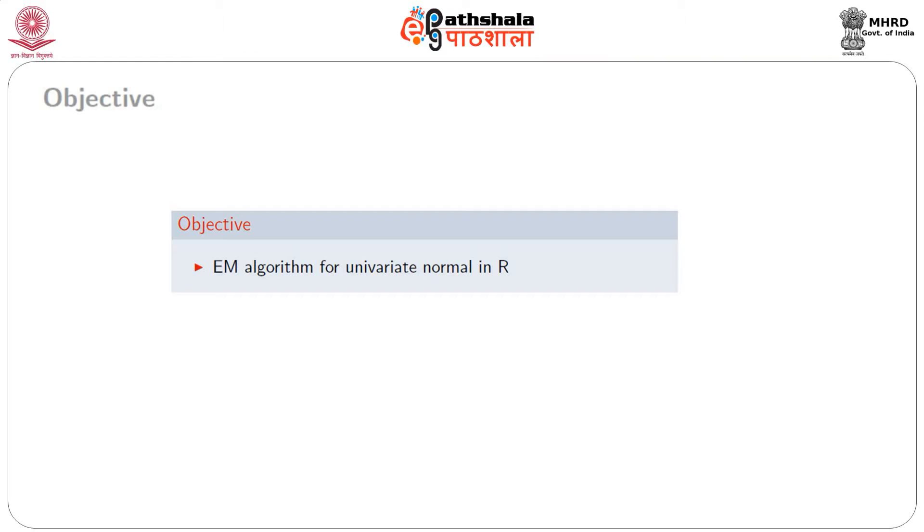Basically what we would do is write a function in R that computes the mean and the variance for a univariate normal distribution when some of the values are missing. We would write a full function on the EM algorithm, but since it would be a long function, we would be writing it in the slides and then calling that function in R to see the outputs. The objective here is to develop an EM algorithm for univariate normal in R.